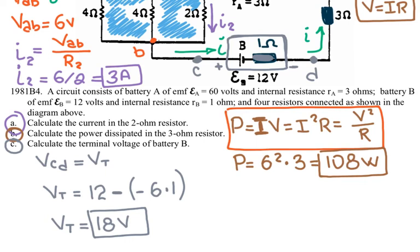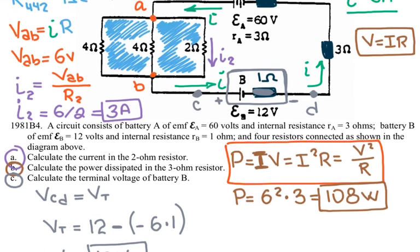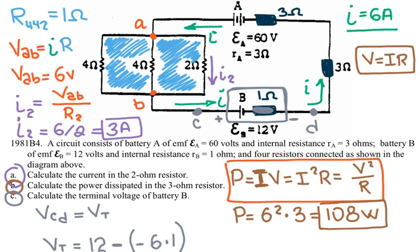That was the 1981 AP Physics B question, which is also relevant for AP Physics 2 review or AP Physics 1, since circuits are covered at the end of that course.